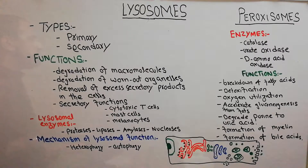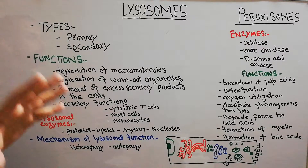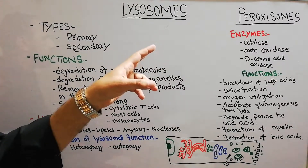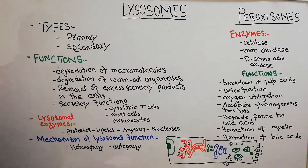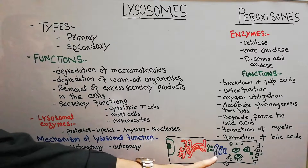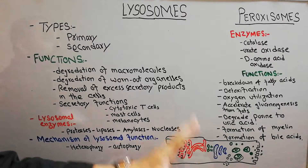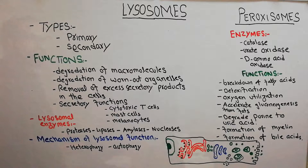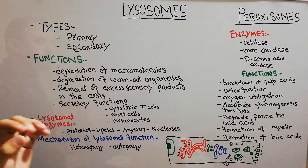Today we are starting a new lecture about membrane-bound organelles. We will discuss two important cell organelles: lysosomes and peroxisomes. Previously, we discussed that the cell is bounded by a membrane and inside there are many organelles — some surrounded by a lipid bilayer membrane and some not. Those surrounded by membranes include the nucleus, mitochondria, endoplasmic reticulum, and Golgi apparatus. Now we will discuss lysosomes and peroxisomes. Lysosomes are basically vesicular structures — vesicles that bud off from the endoplasmic reticulum or Golgi apparatus.